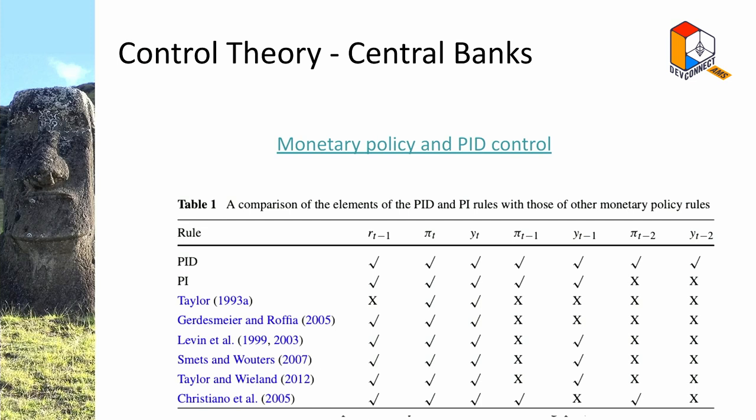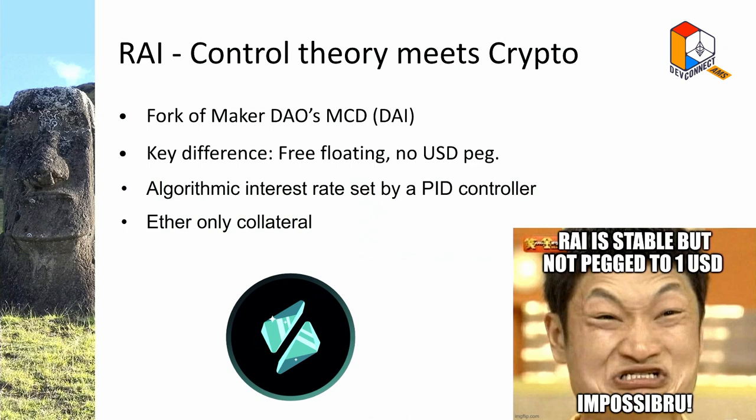Moving to RAI: RAI is a fork of MakerDAO's MCD — what we know as DAI — with one very key difference: it's free-floating. Its peg isn't one dollar; there's a floating peg where the PID control decides the peg. And last but not least, it's ETH-only collateral.